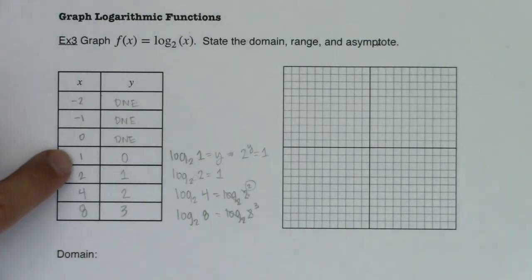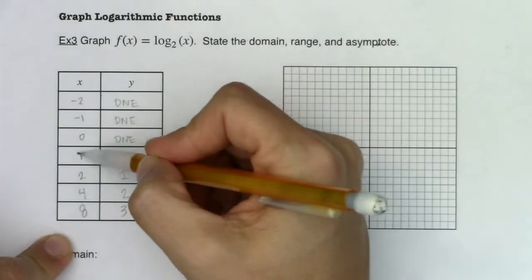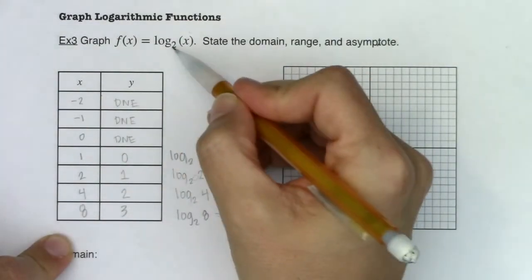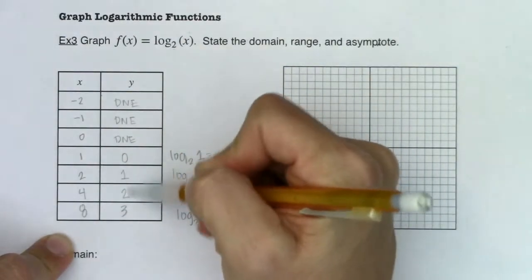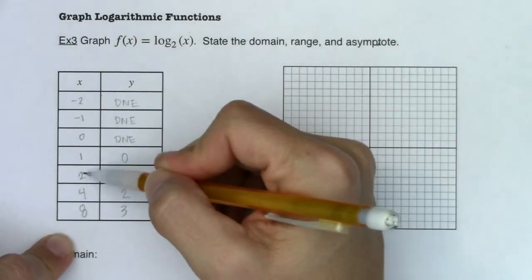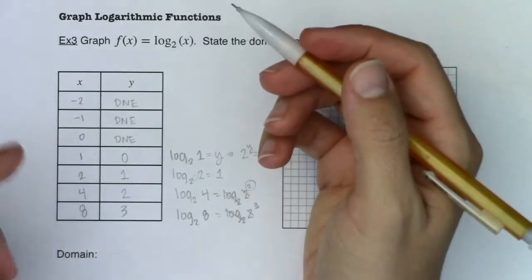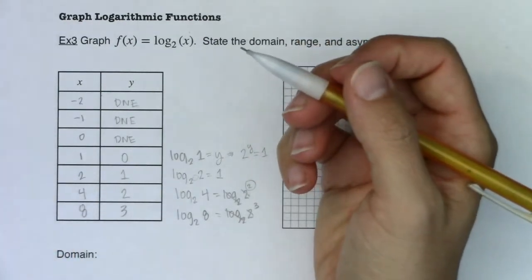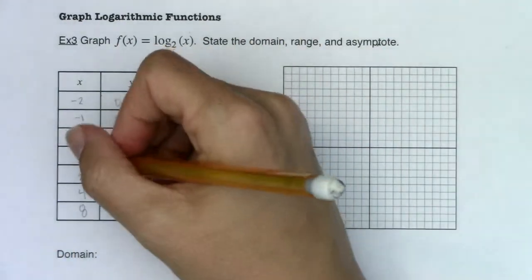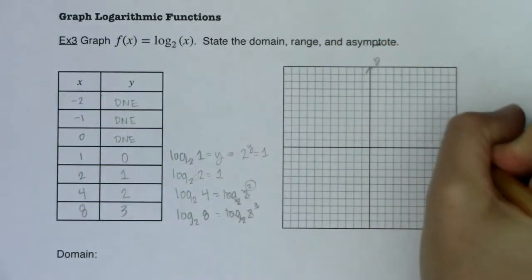Intentionally pick x values that are powers of your base so you can get nice integer answers here. It's not to say you couldn't have plugged in three or five, but it just makes your life a little bit easier when everything matches up. So I've got my four ordered pairs. Let's see what we've got.